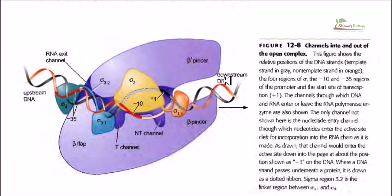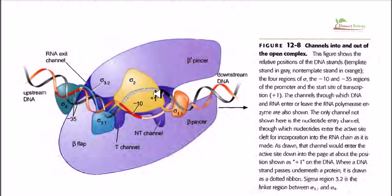To perform all these functions, RNA polymerase must be structured so that DNA can pass through it, the newly made RNA can exit, and nucleotide sequences needed during transcription can enter. For this purpose it has different types of clefts or channels. Two similar types of clefts are the upstream and downstream DNA channels: DNA to be transcribed enters through the downstream DNA channel and is released through the upstream DNA channel.